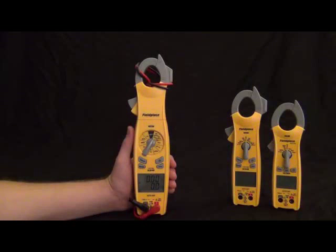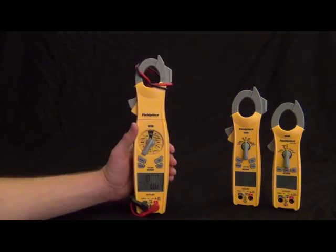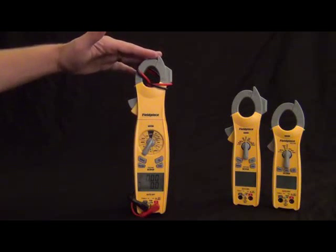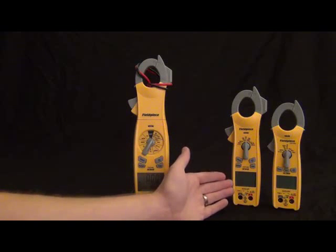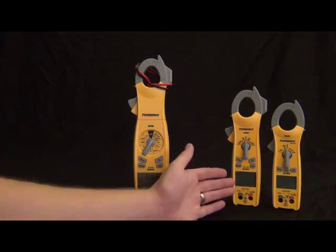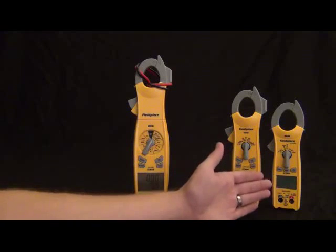Hi, this is Russ Hardy with Field Piece Instruments. I'm going to show you the new Field Piece Clamp Meter line. First we have the SC600 series, this is the fully loaded feature rich line. Then we have the SC400 series, which is all the essential features in a mid-sized package. Then we got the SC200 series, which is all the everyday features in a nice compact package.